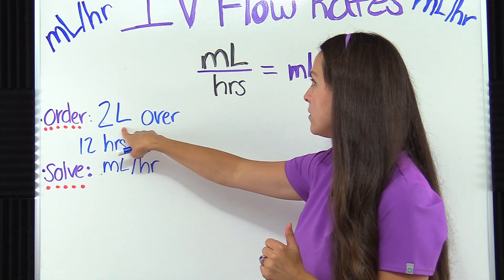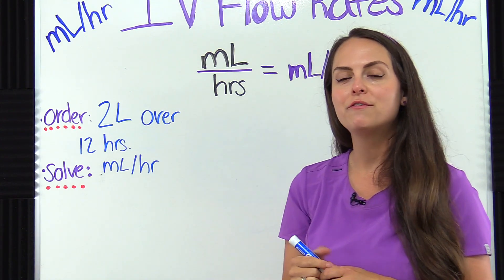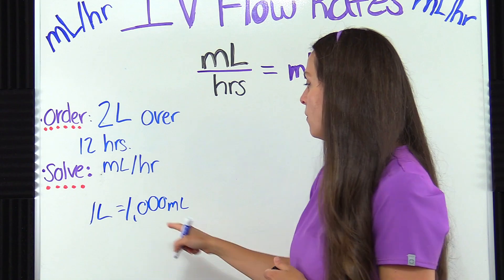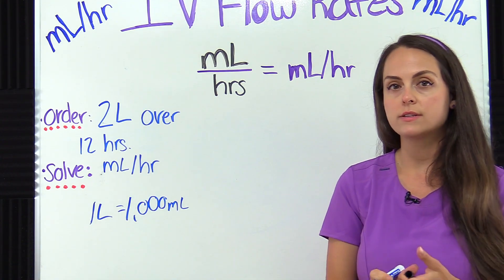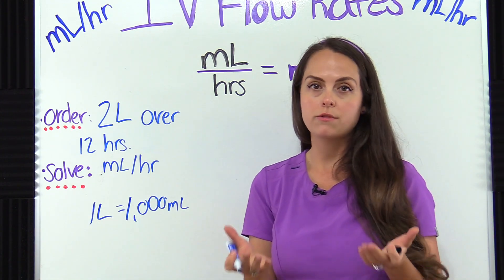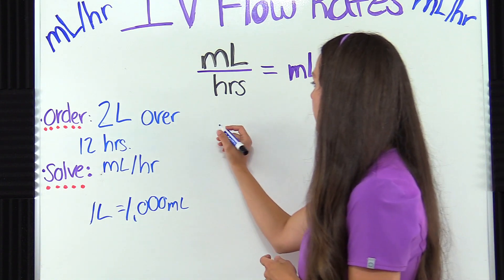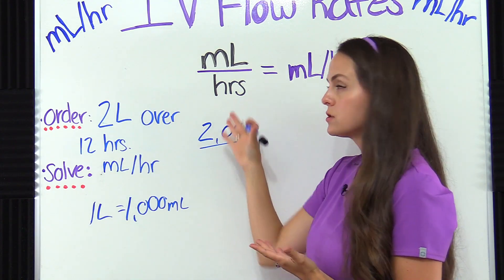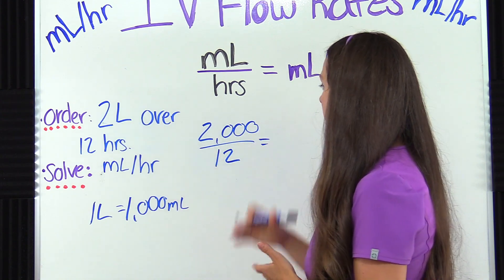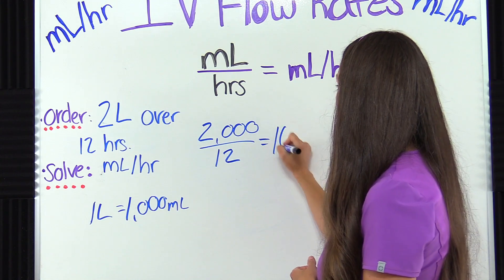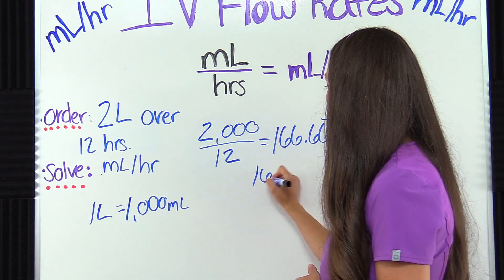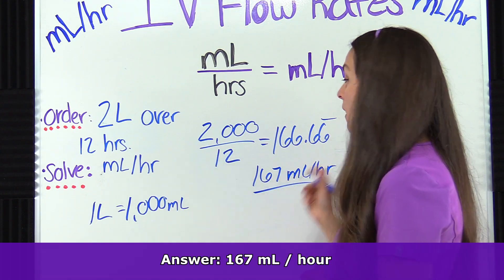But look at this problem — our total volume amount is in liters, so we've got to do a little converting. From the metric table, one liter equals 1,000 milliliters. So 1,000 times two gives us 2,000, meaning two liters is equivalent to 2,000 milliliters. We put 2,000 on the top part of our formula, and it needs to infuse over 12 hours, so that goes over 12. 2,000 divided by 12 gives us 166.66 repeating, which rounds to 167 milliliters per hour — that is our hourly rate.